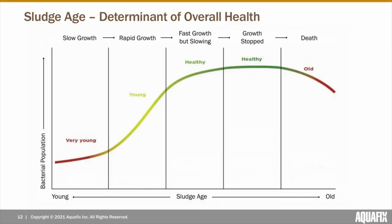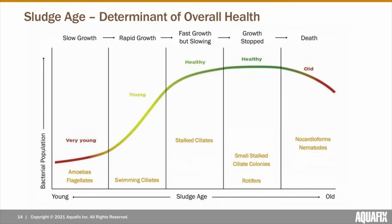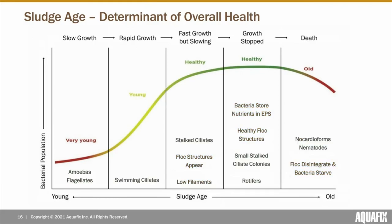One of the main components we focus on when determining the overall health of a plant is the sludge age — the amount of time solids are spent under aeration. Knowing the sludge age is important, as many aspects of your plant's microbiology are a direct result of it. Things that help us determine approximate sludge age include the bacterial population, metazoa and protozoa population, and overall flock health. Other factors such as environmental or mechanical issues can also influence these characteristics.